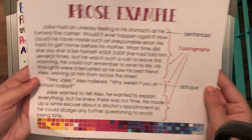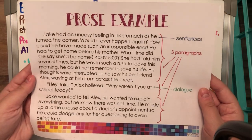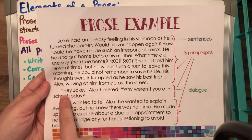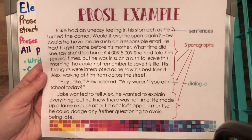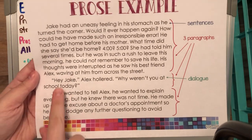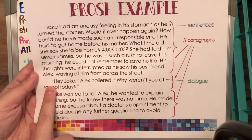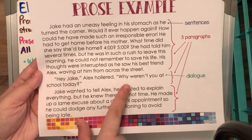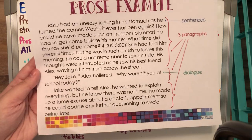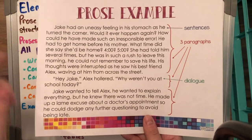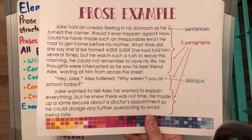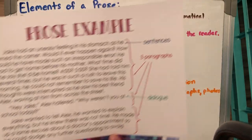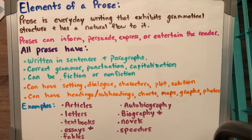Here is an example of a prose, just so you can see. As you can see, it's written in three paragraphs. There's some dialogue — and remember, in a play there are no quotation marks for dialogue because dramas have a lot of dialogue, but in our proses we put the dialogue in quotation marks. It's all written in sentences, it's all telling a story.